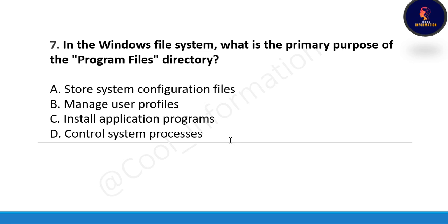Next question: In the Windows file system, what is the primary purpose of the Program Files directory? Option A: store system configuration files, Option B: manage user profiles, Option C: install application programs, Option D: control system processes. The correct option is Option C, install application programs is the primary purpose of the Program Files directory.